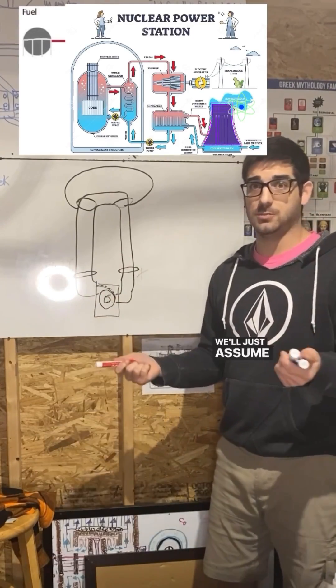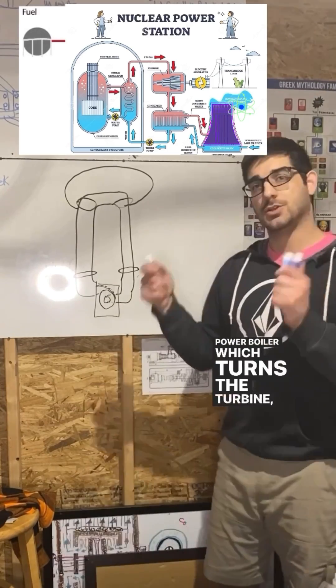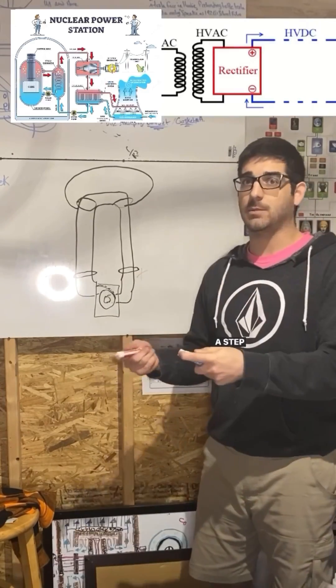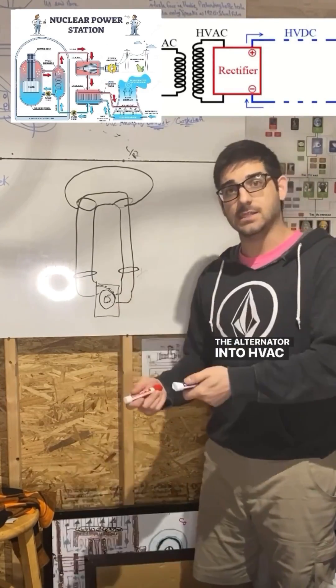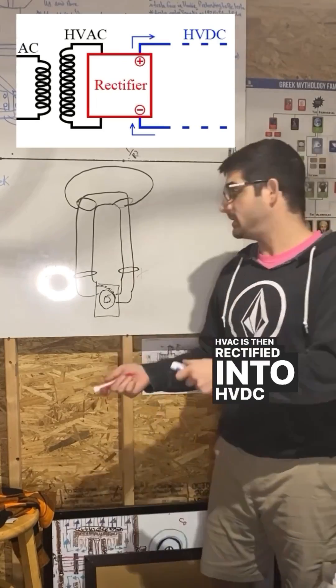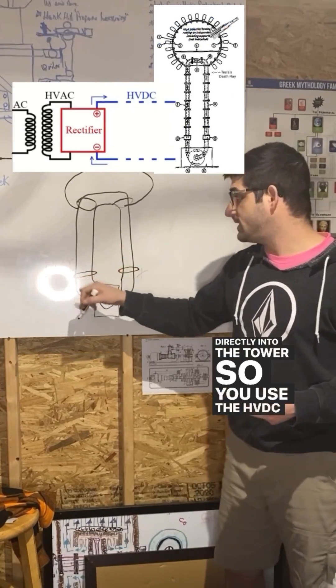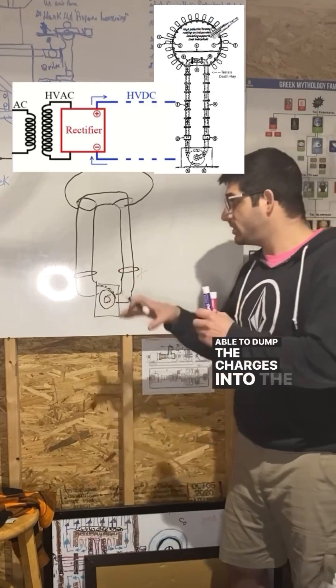You first need some sort of energy input - we'll just assume you have nuclear fuel - and that HVDC is then fed directly into the tower. So you use the HVDC to actually dump the charges into the upper terminal.